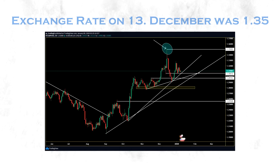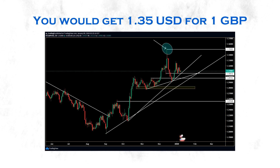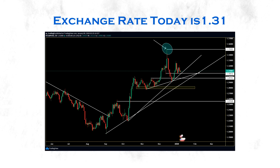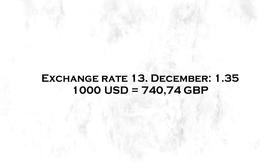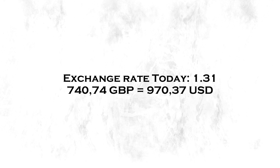The exchange rate of GBP/USD on the 13th December was around 1.35, meaning you would get 1.35 dollars for 1 pound. Today the rate is around 1.31, so you would only get 1.31 dollars for 1 pound. If you had exchanged 1,000 US dollars into British pounds on December 13th at 1.35, you'd have gotten 740 pounds. Changing that 740 pounds back today at 1.31 gives you only 970 dollars — a loss of around 30 dollars. With 10,000 that's nearly 300 dollars lost; with 100,000 it's 3,000; with a million it's nearly 30,000.